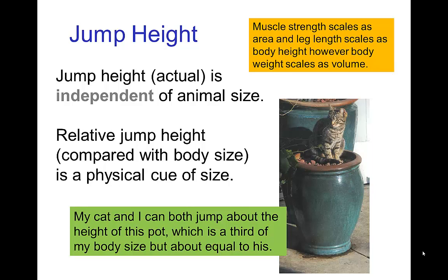Now I have an advantage of having longer legs and much larger muscles. However, I don't jump higher than my cat because I have the disadvantage that I weigh much more. So the longer legs and larger muscles are almost exactly balanced by the greater weight that I have to lift when I jump.